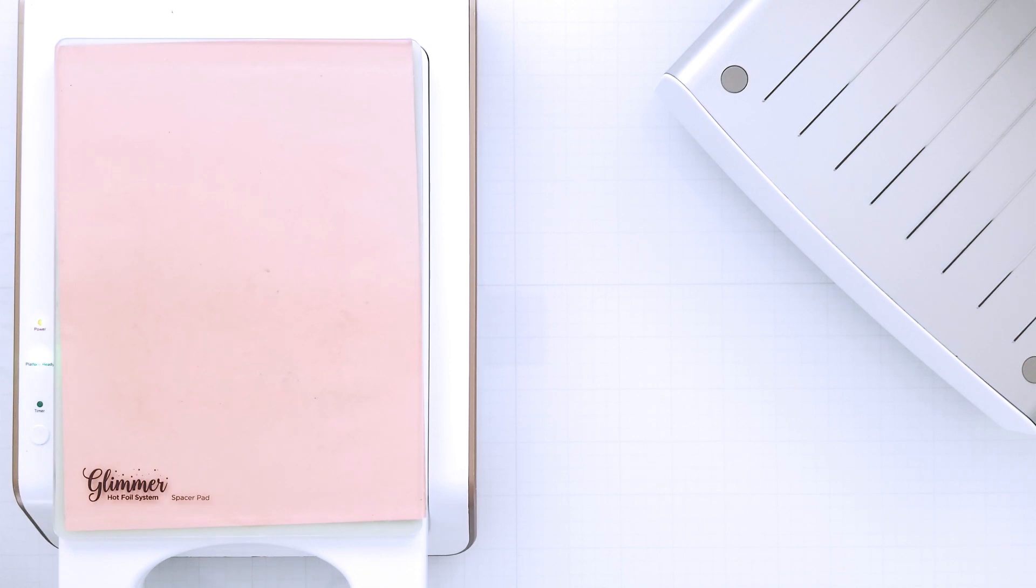Now I do use a thin cardstock shim. You can see that orange paper between my two plates when I foil. You may need to play around with that because the thickness of the Better Press plates and the glimmer plates are a little different. So you may need to use a couple of shims depending on how old your die cutting machine is. So just play around until you get the result you want. Now I'm taking one of the Stylish Ovals dies and cutting out the center of that foiled image. It's going to create a really pretty focal image for my card.